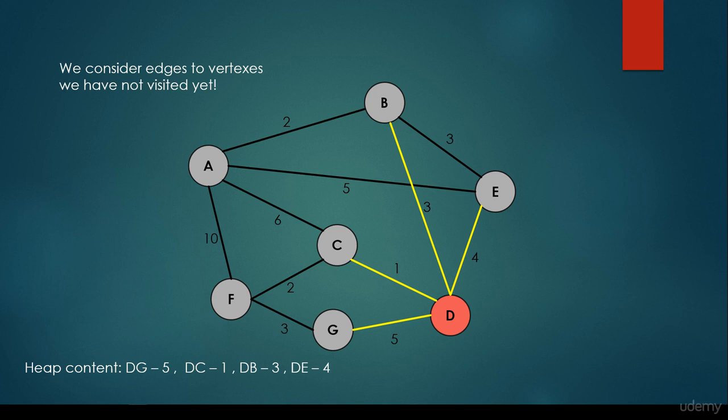What's the next step in the Prim-Jarnik algorithm? We get the edge with the minimum edge weight from the heap — we just have to get the root node of the heap. It's going to be edge DC with edge weight 1, and we set this vertex to be visited. The algorithm is going to iterate as long as there are some unvisited vertices in the graph. In this case we have 5 unvisited vertices, so we have to keep going.